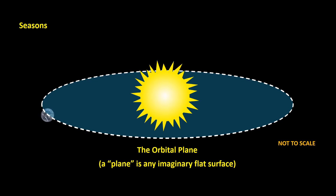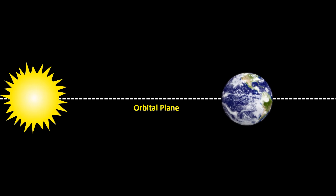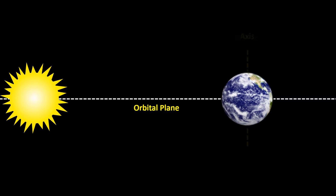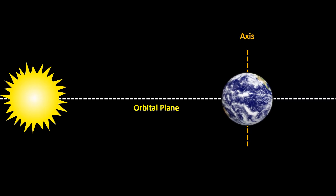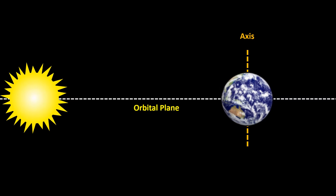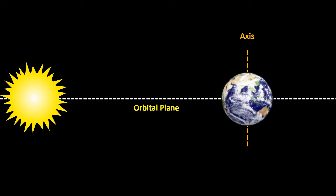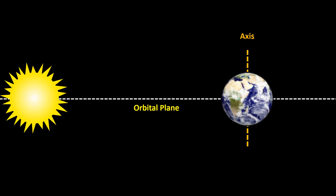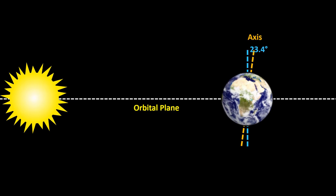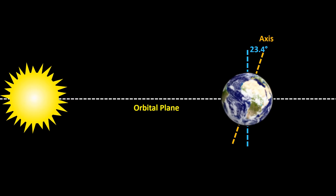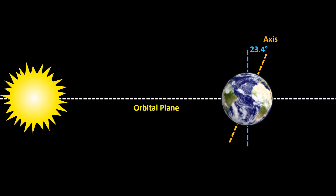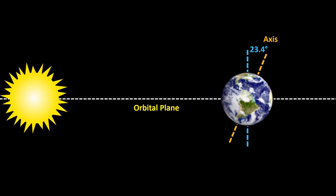The reason that the Earth experiences seasons comes down to the fact that the Earth's axis — the imaginary line running from the North Pole to the South Pole — isn't perpendicular, that is, at right angles to the orbital plane, but is tilted at an angle of 23.4 degrees.